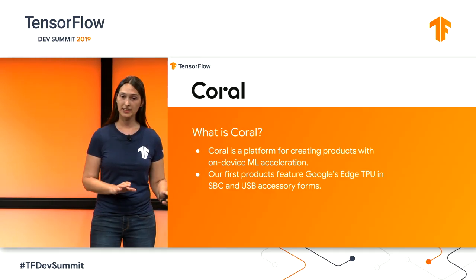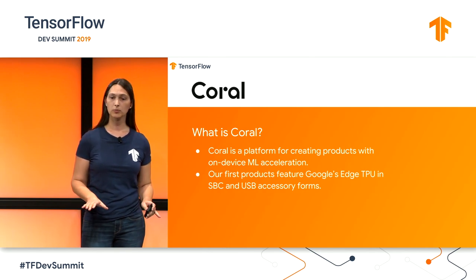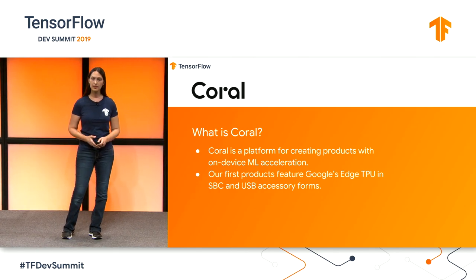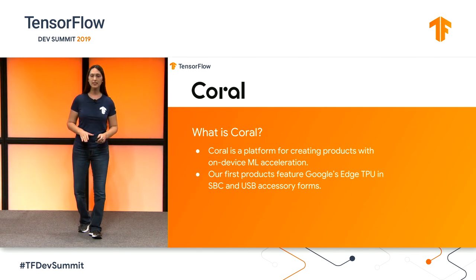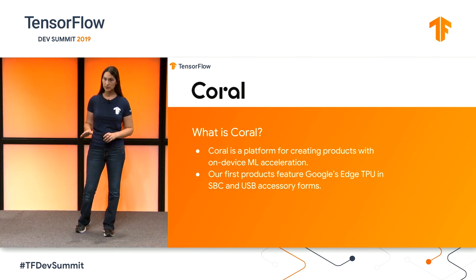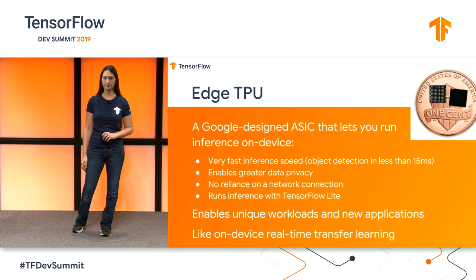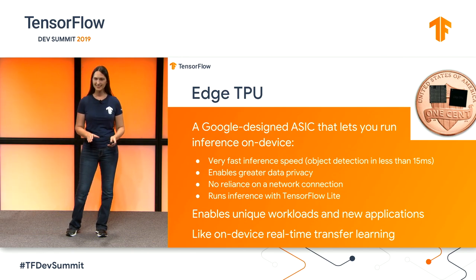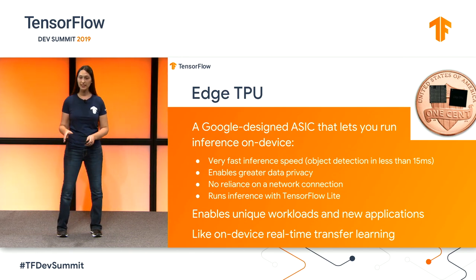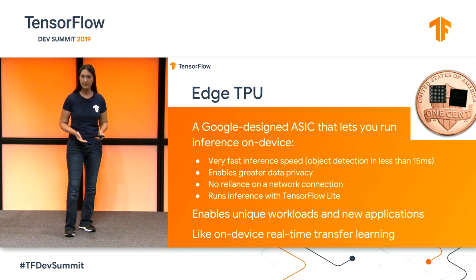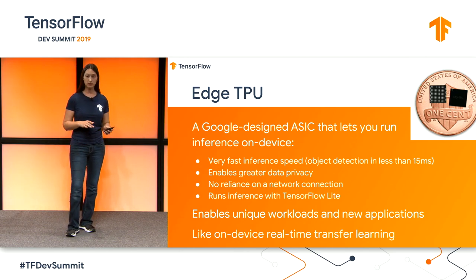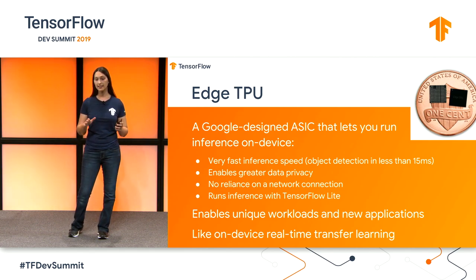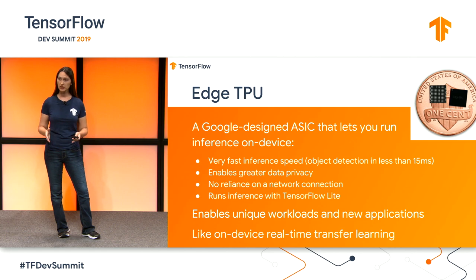Coral is a platform for products with on-device machine learning using TensorFlow and TF Lite. Our first two products are a single-board computer and a USB stick. The Edge TPU is a Google-designed ASIC that accelerates inference directly on the device. It's very fast, localizes data to the edge rather than the cloud, doesn't require a network connection to run, and enables a whole new range of machine learning applications.